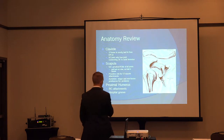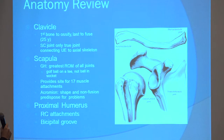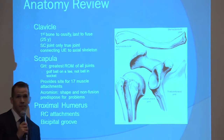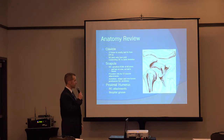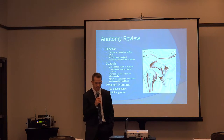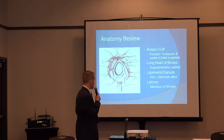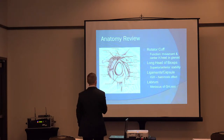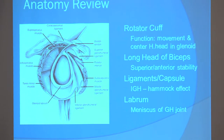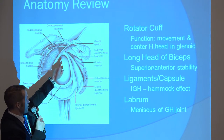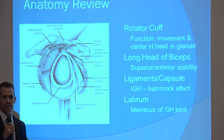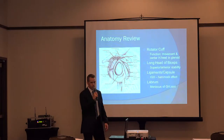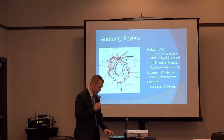In general, the shoulder is made up of three major bones: the clavicle, the proximal humerus, and the scapula. You can think of your shoulder as a golf ball on a tee. It's that relationship that gives the shoulder such good range of motion compared to the other joints in our body, but that's also what lends to the instability that we see with the shoulder. The soft tissue structures around the shoulder are going to be the rotator cuff, which functions in initiation of motion, as well as centering the humeral head within the glenoid, the long head of the biceps that attaches on the superior labrum, and the ligaments in the capsule.